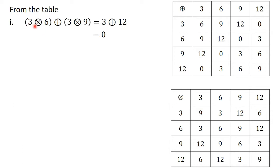We can find 3 times 6 from the multiplication table, and 3 times 9 gives us 3 plus 12. From the addition table, 3 plus 12 gives us 0.